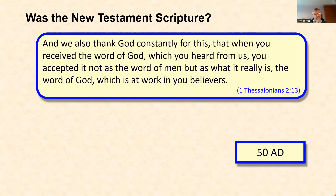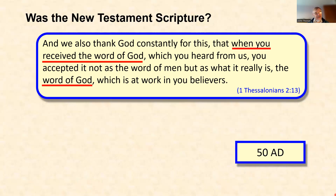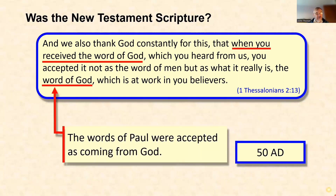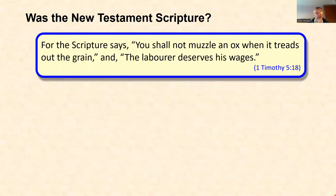1 Thessalonians was probably written in the summer of 50 AD — certainly after 49 AD and before the end of 51 AD. It's one of the earliest books, probably the third book written in the New Testament. It talks about the people in Thessalonica recognizing that what the apostles say is the word of God. It's also evidence that in 50 AD people were already distinguishing between the word of God and words that are not — so we have the start of a canon distinction right at the beginning of the New Testament period.